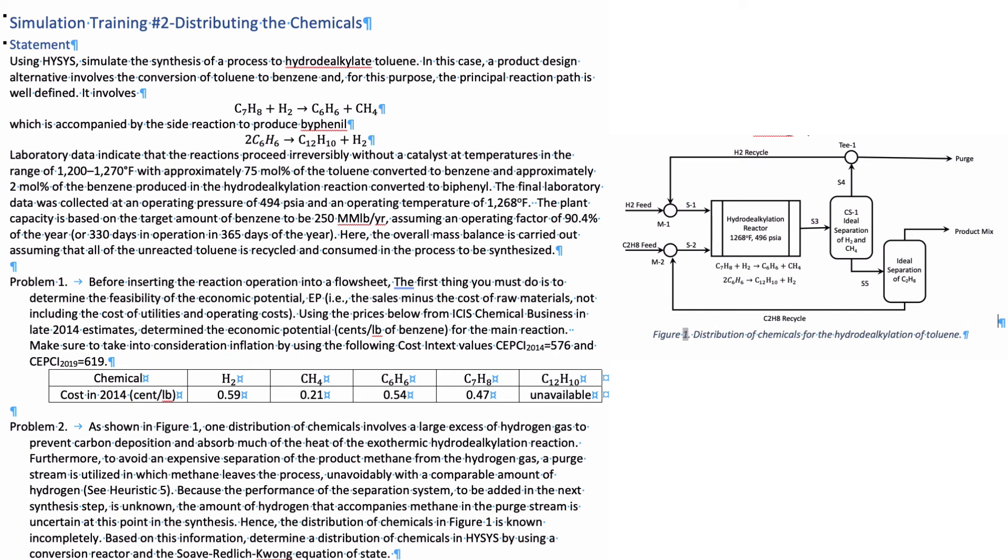Anyways, you can always optimize this. So we're going to just set it up initially. Hence the distribution of chemical in figure one is not incompletely known. Based on this information, determine the distribution of chemical in HYSYS by using a conversion reactor and the Soave-Redlich-Kwong equation of state. So let's start.